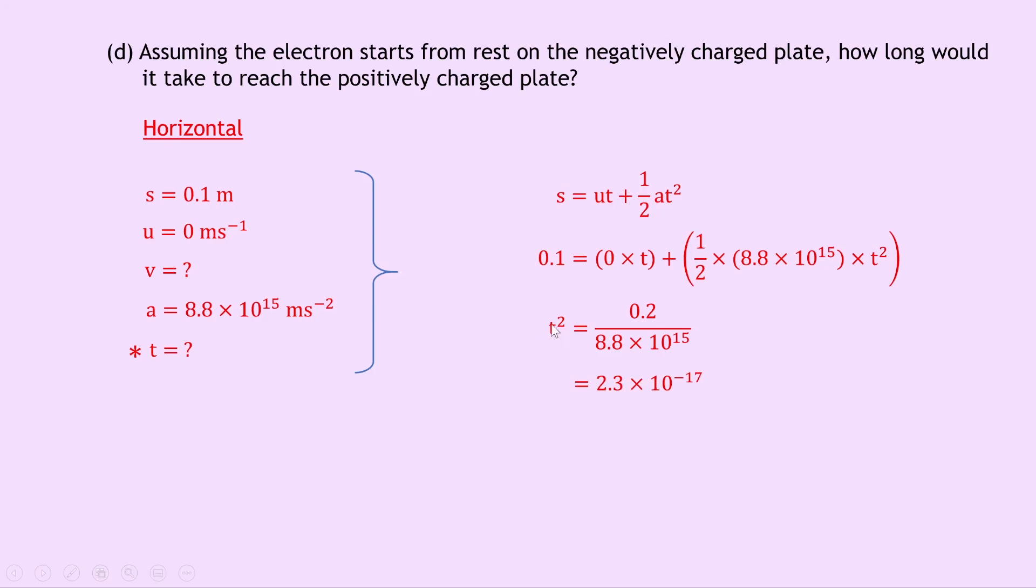However, that's T squared, not T. So to get T on its own, we need to square root both sides. So we get T equals 4.8 times 10 to the minus 9 seconds.